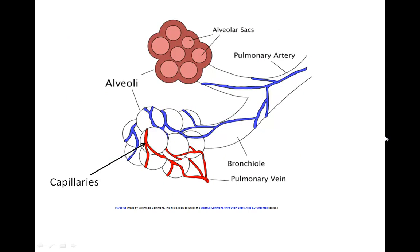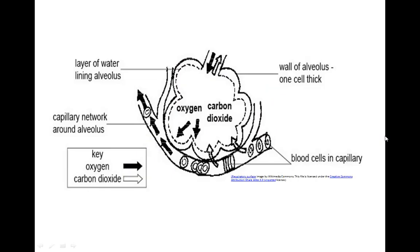The bronchi branch and branch into tiny tubules known as bronchioles, which lead into the microscopic air sacs of the lung, the alveoli. Pulmonary arteries transport deoxygenated blood to the lungs from the heart, and pulmonary veins transport oxygenated blood from the lungs back to your heart. Pulmonary arteries run alongside the walls of the alveoli. Carbon dioxide is unloaded out of the blood at the alveolus and oxygen is loaded into the blood capillary.